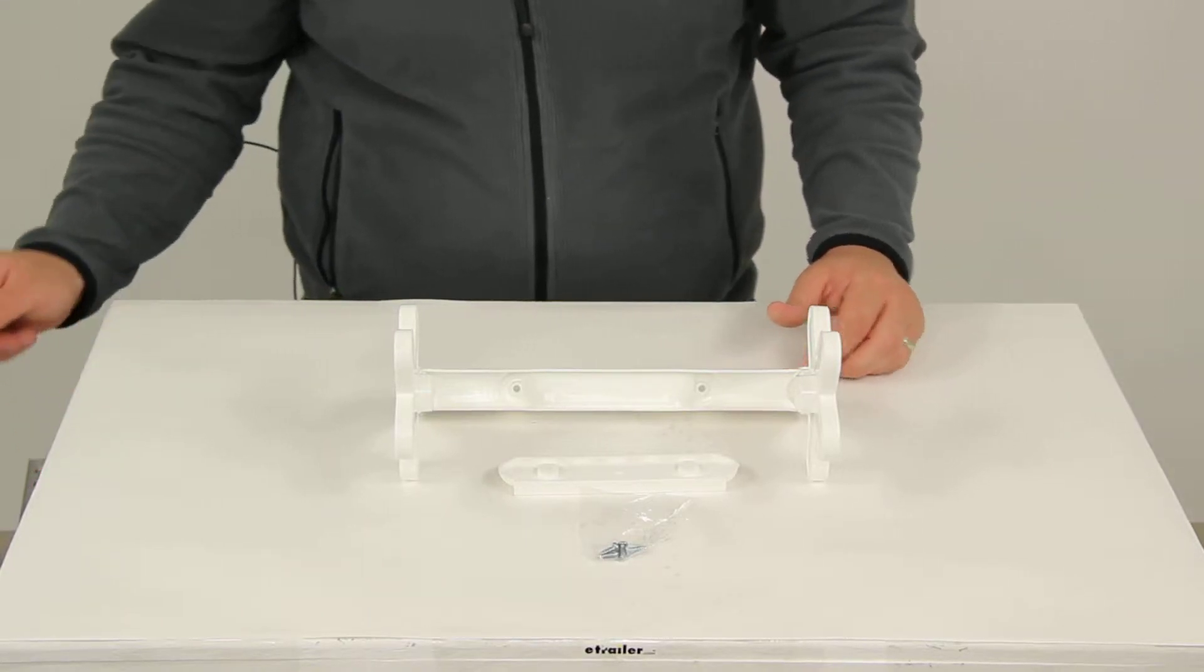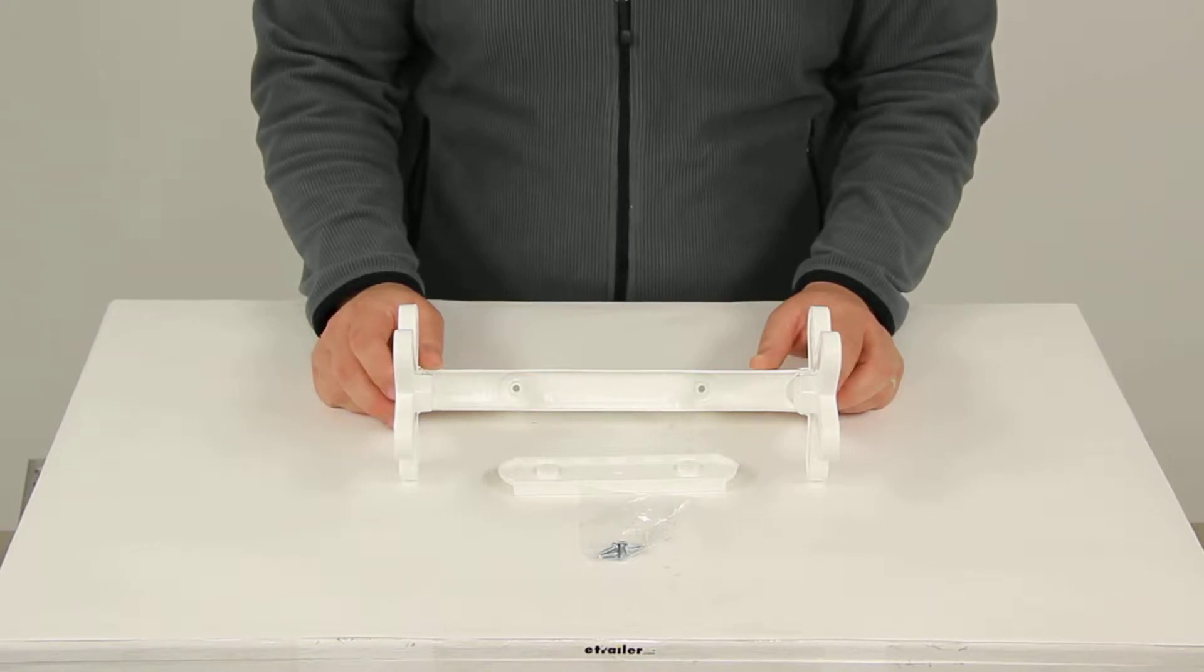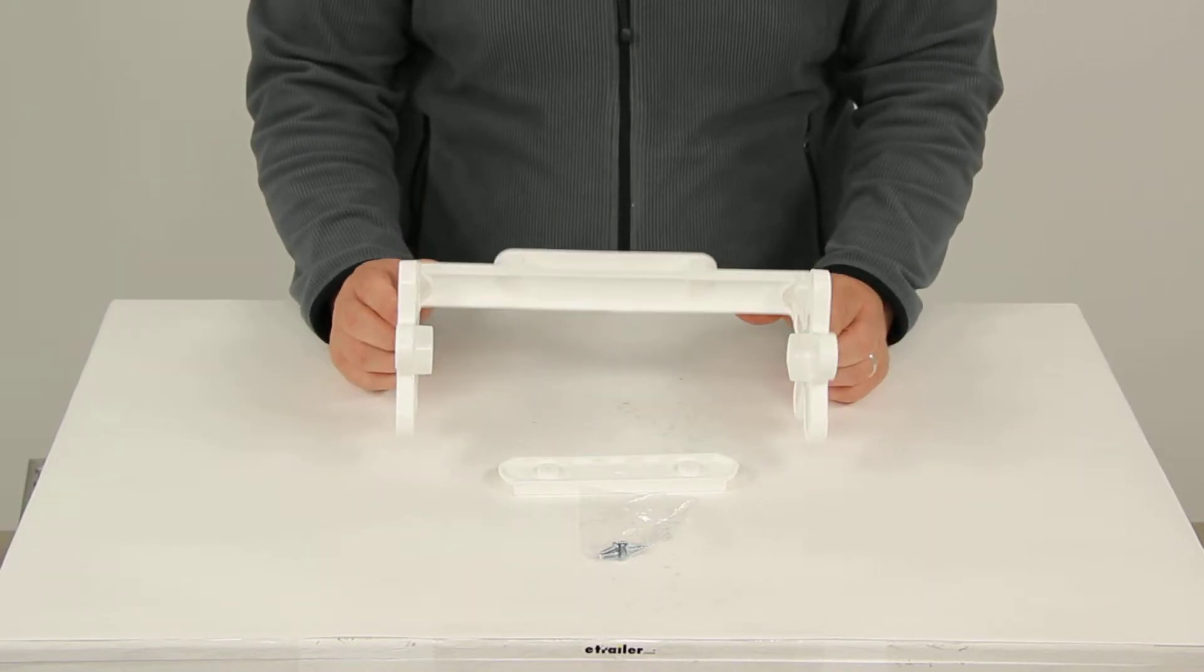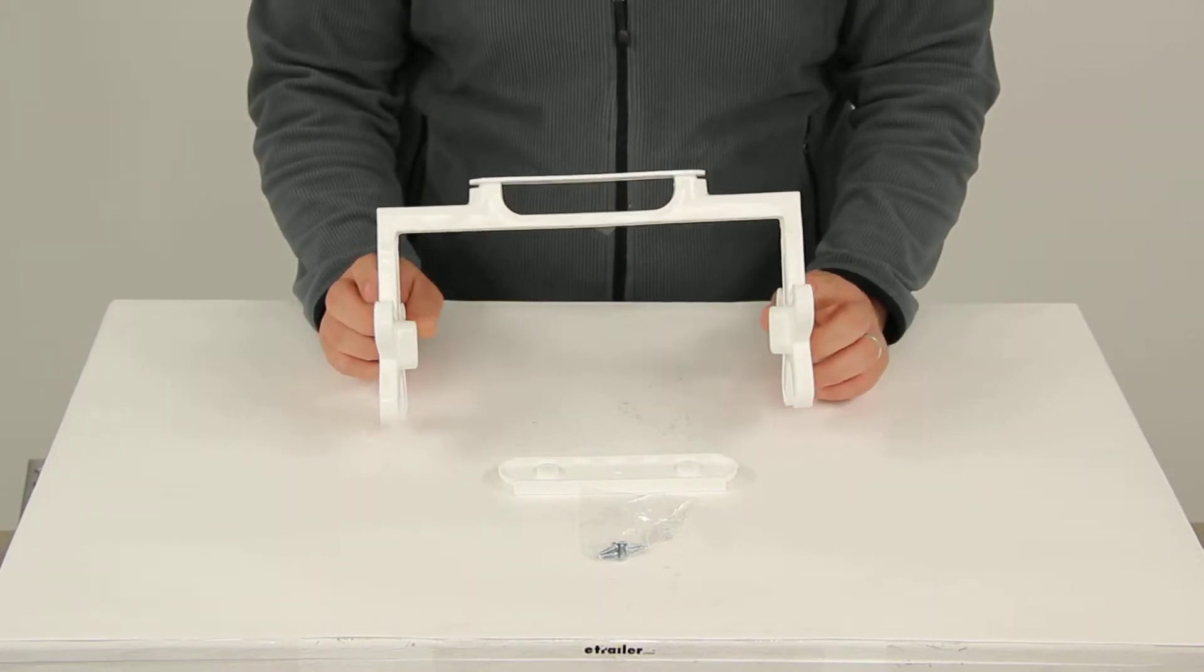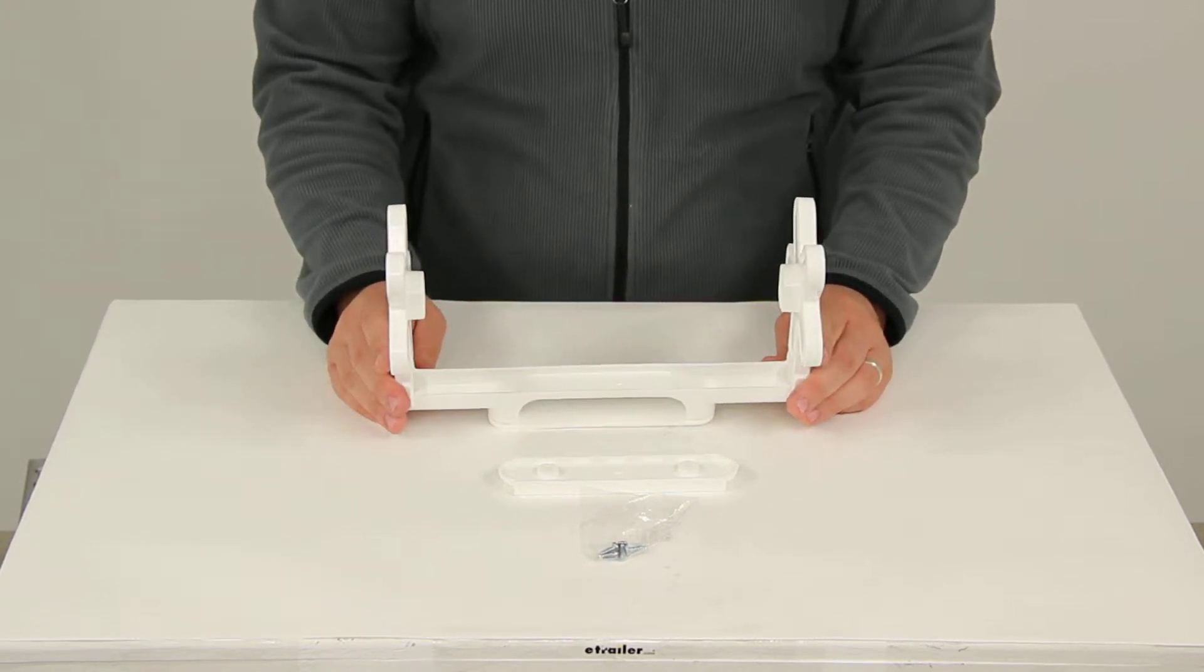Today we'll be reviewing part number CAM57111. This is the CAMCO Pop-A-Towel Paper Towel Dispenser. Paper towel dispensers are going to mount under your cabinet, on the cabinet door, or on the wall to help provide storage without taking up much space.